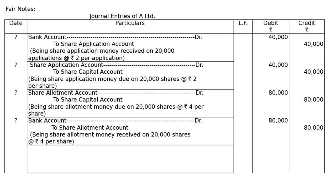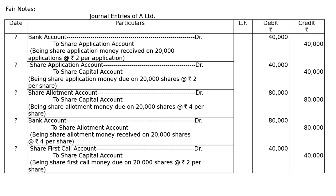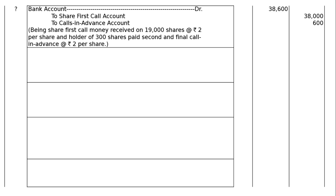When the first call was made — not the final call — share first call account debited to share capital account. Being share first call money due on 20,000 shares at the rate of Rs. 2 per share — 20,000 into 2 = Rs. 40,000 each. But the problem starts with the receipt entry. Bank account debited to share first call account. 5 shareholders holding 1,000 shares could not pay first call, so out of 20,000 shares, 20,000 minus 1,000 = 19,000 paid. 19,000 into 2 = Rs. 38,000.